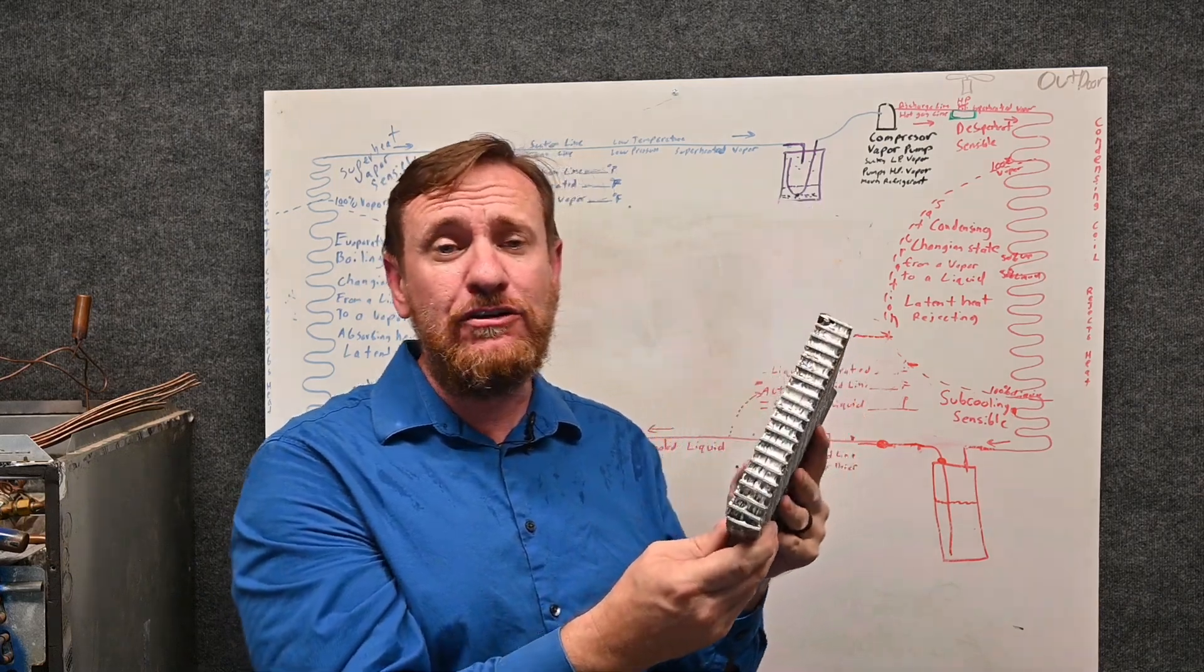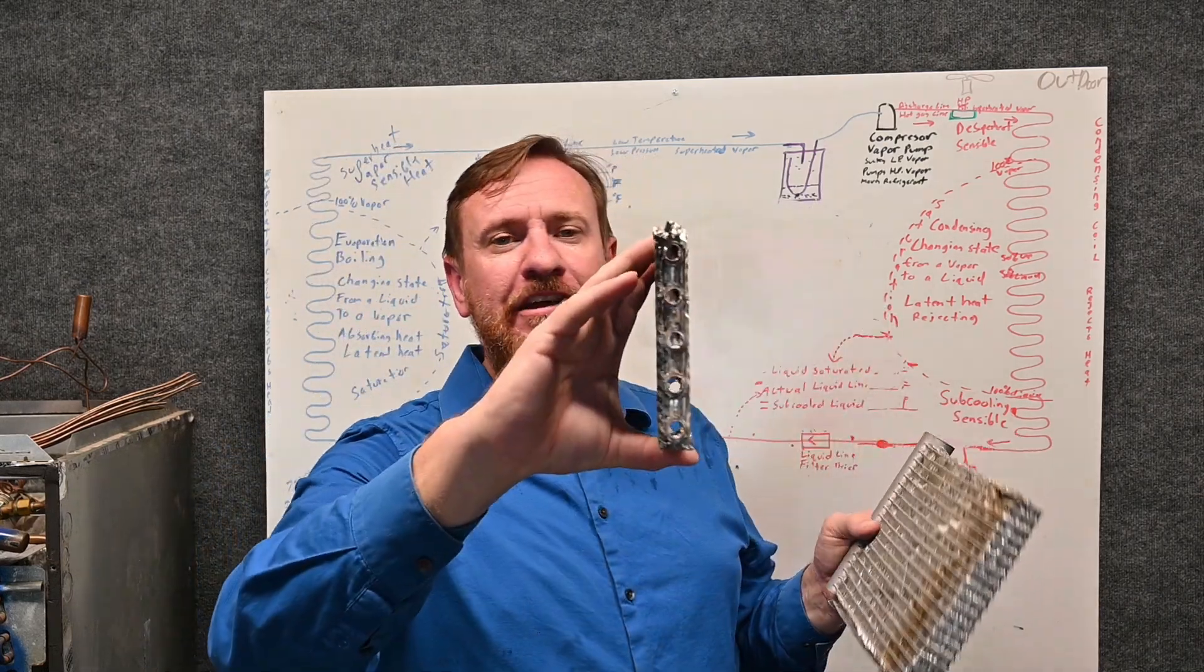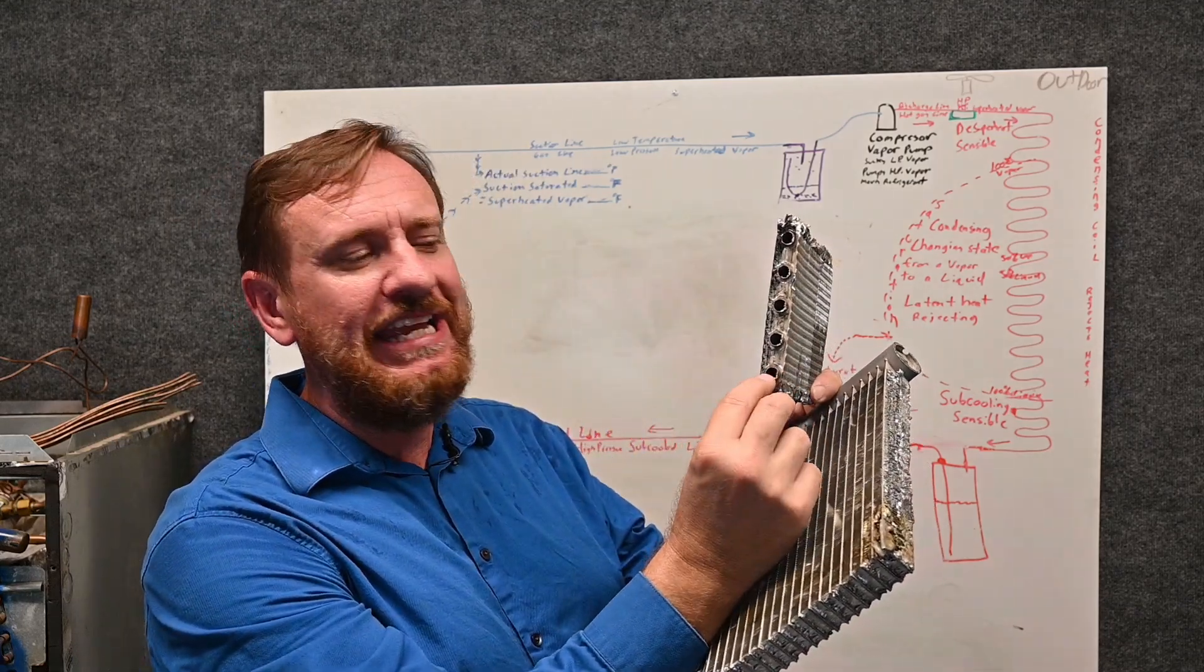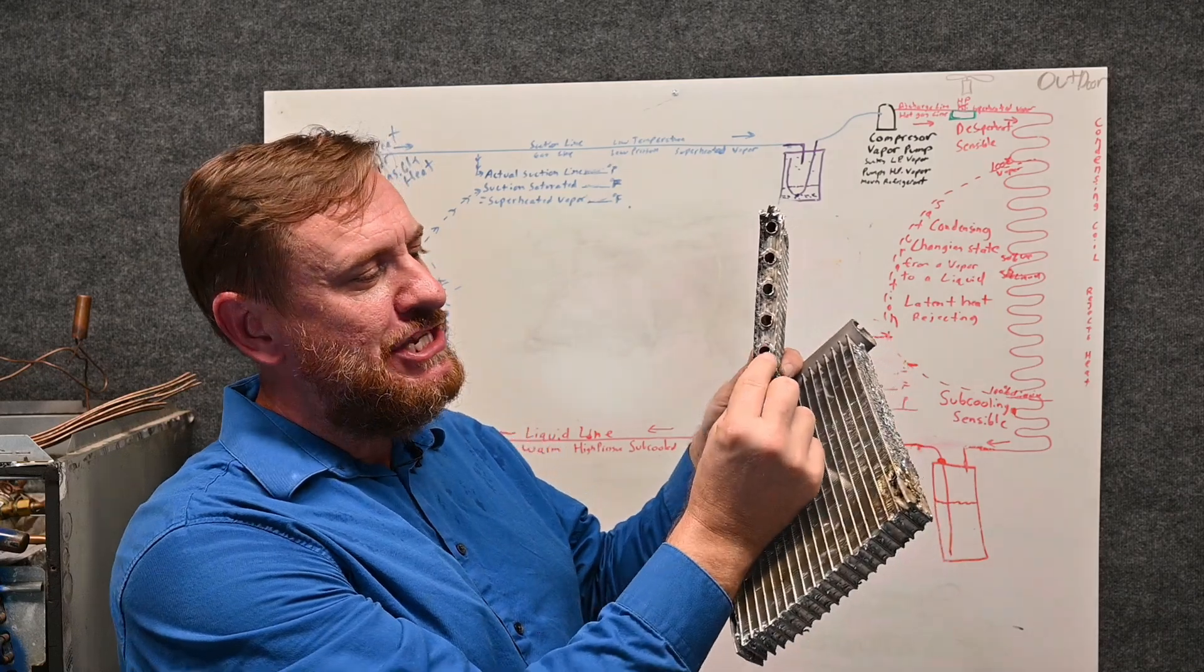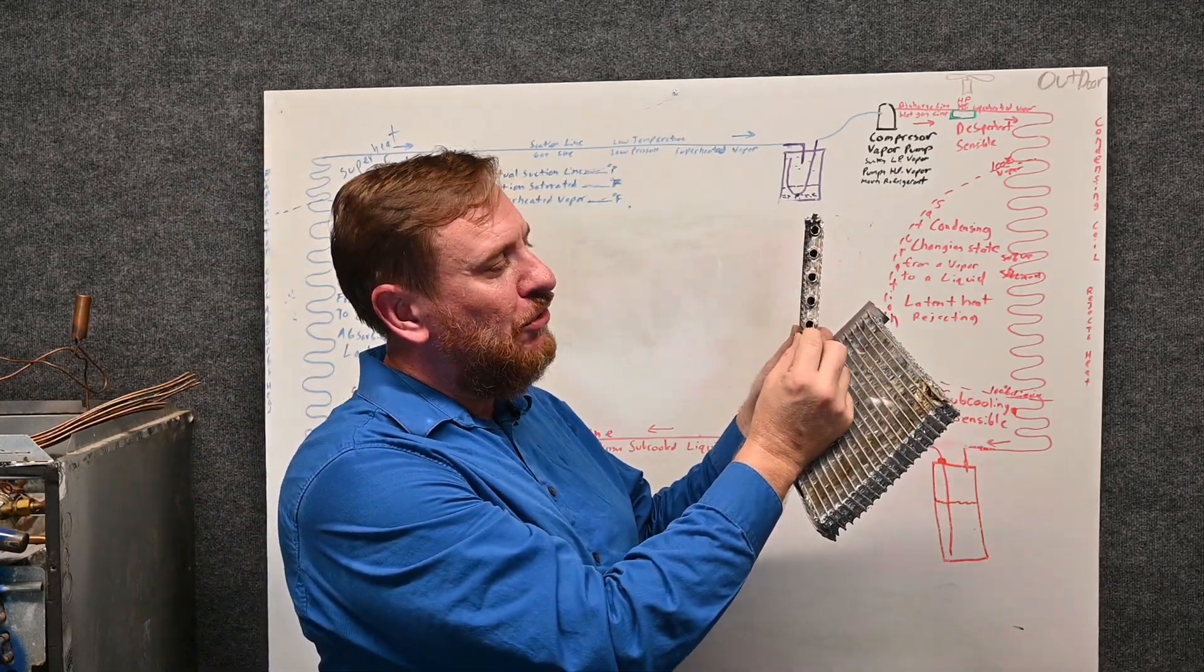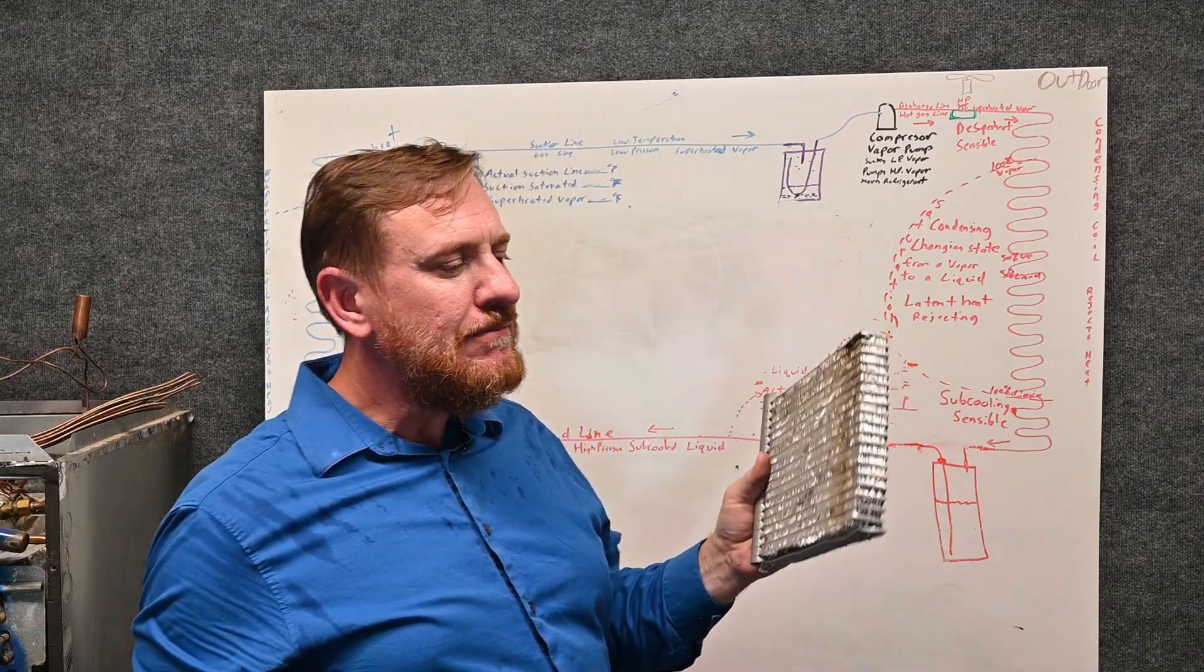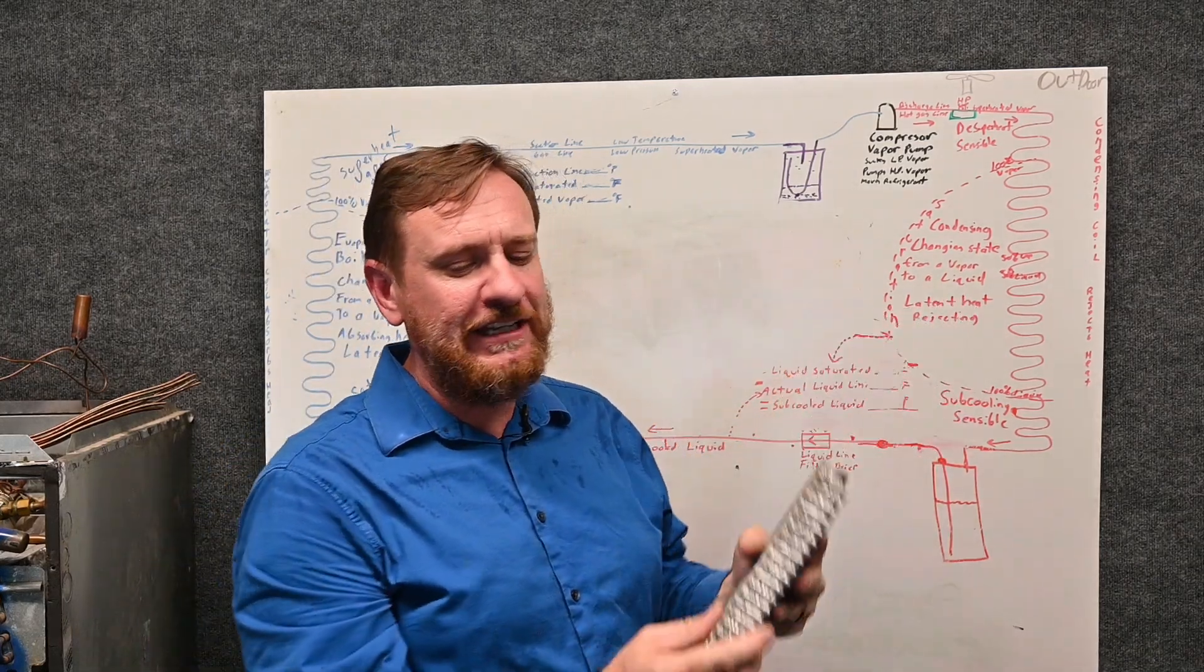If you think about this large tube, refrigerant's only transferring heat on the very outside edge of this pipe. So if it's transferring heat only on the outside edge of the pipe, the refrigerant in the middle isn't really doing that much for heat transfer. So this is much more effective at heat transfer.